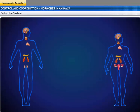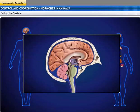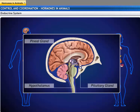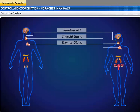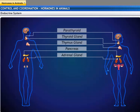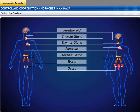For a better understanding of the endocrine system, let's look at the endocrine system in the human body. It consists of the pituitary gland, the pineal gland, the hypothalamus, the thyroid, the parathyroid, the thymus, the adrenal gland, the pancreas, the testes, and the ovary. We will look at the functions of each of these glands.